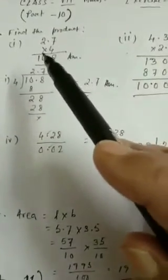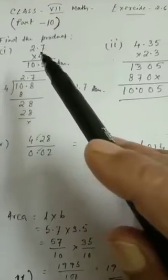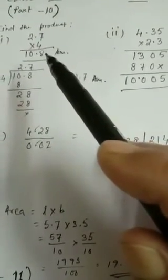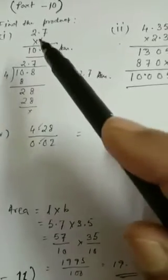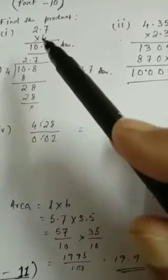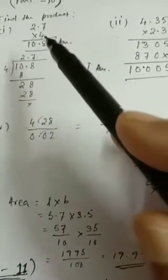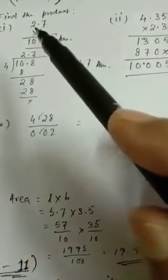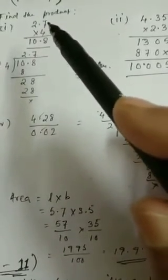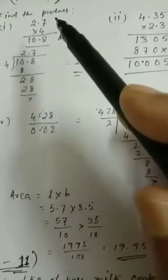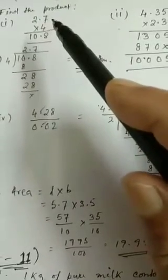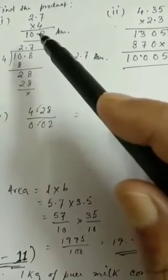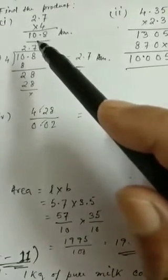Find the product. Number 1: 2.7 into 4. So you multiply directly. 27 into 4 is 28 — write 8, carry 2, so 8 plus 2 gives 10. Now count the decimal point from the right side — that is one decimal place. So count one number from the right side and put the decimal. Your answer is 10.8.